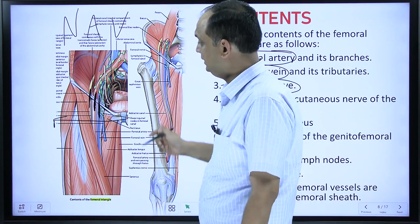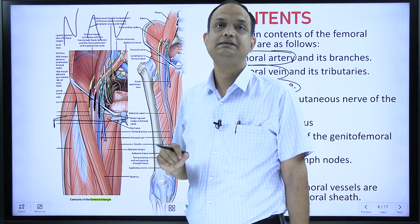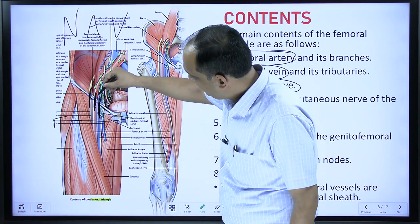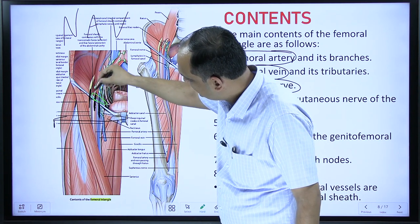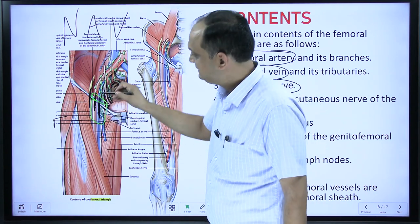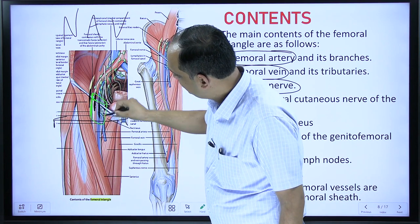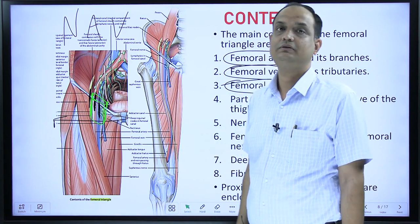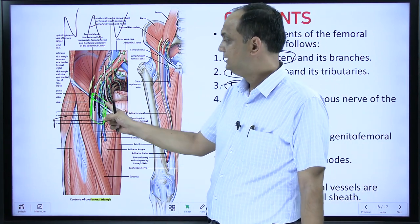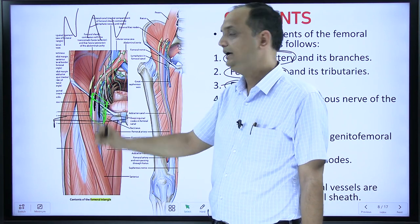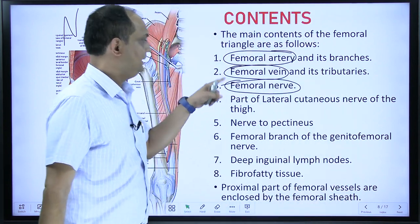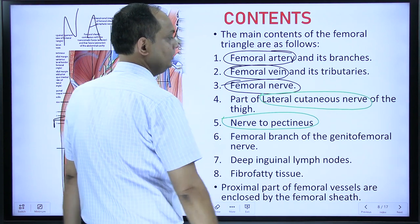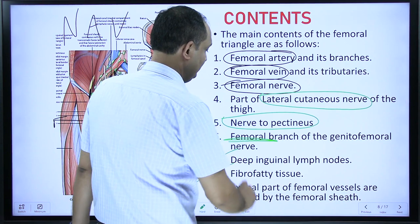There is an envelope of fascia known as the femoral sheath, which encloses the vessels but not the nerve. This femoral sheath covers the femoral vein and artery, but the femoral nerve is outside the sheath. Two important exam points: femoral nerve is not part of the femoral sheath, and the relation of the neurovascular bundle from medial to lateral is V, A, N — femoral vein, femoral artery, femoral nerve. Apart from these three structures, there is also the lateral cutaneous nerve of thigh, nerve to pectineus, femoral branch of genitofemoral nerve, deep inguinal lymph nodes, and fibro-fatty tissue.